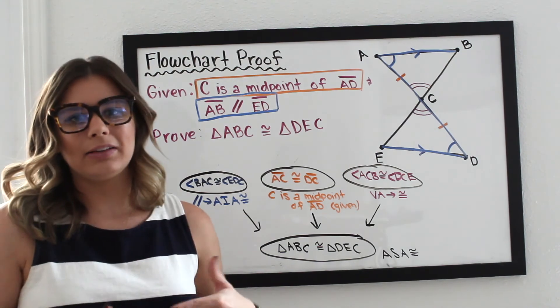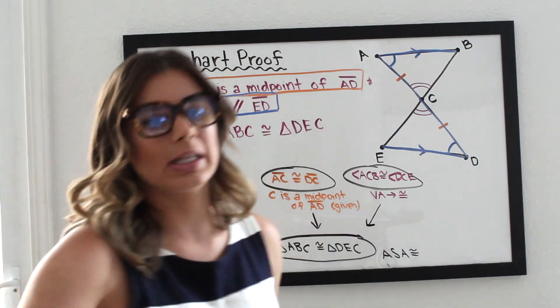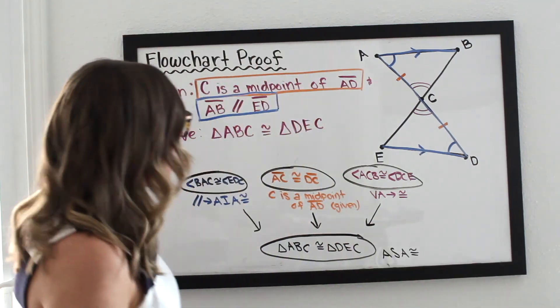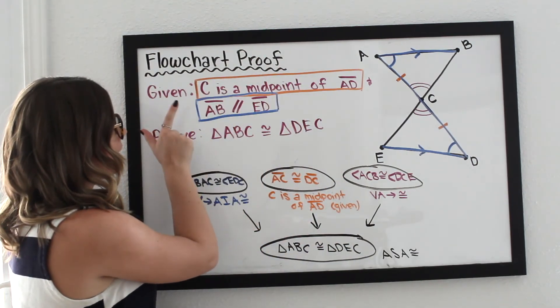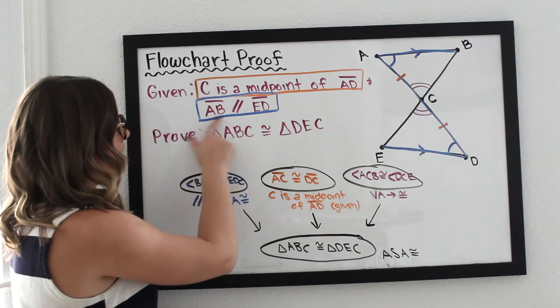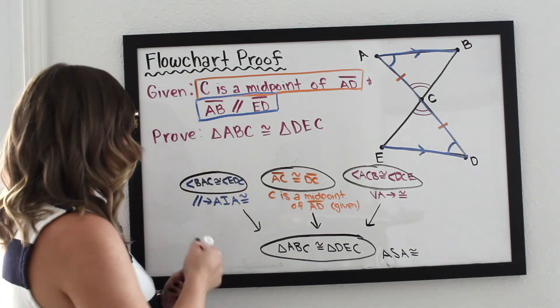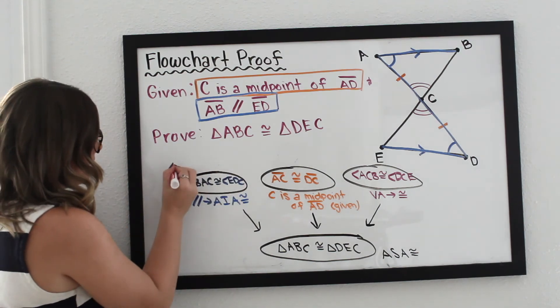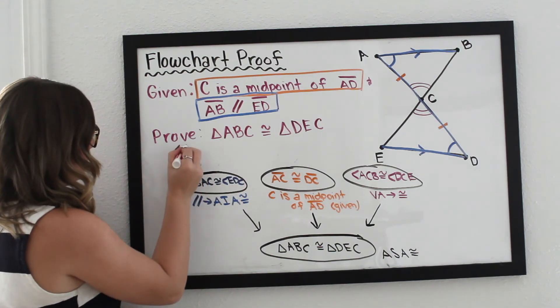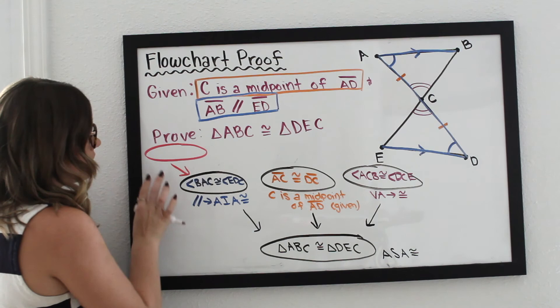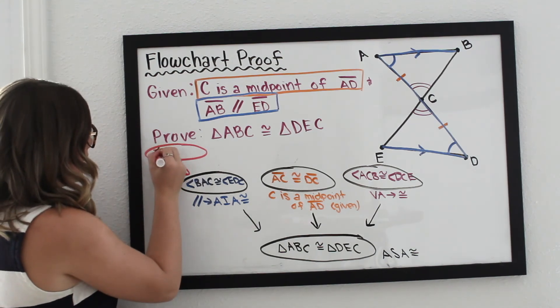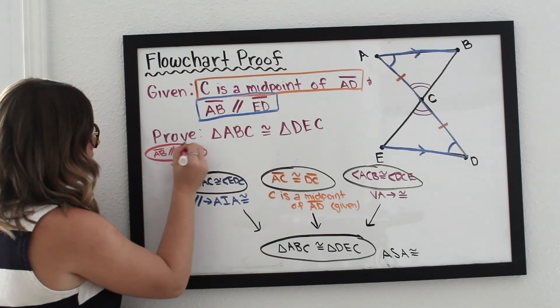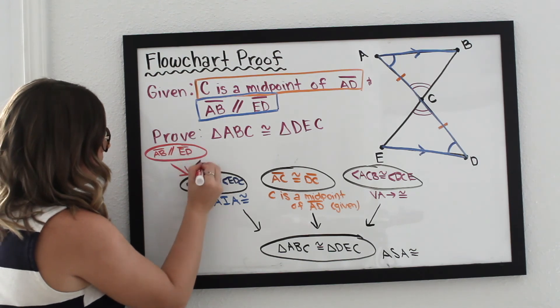One kind of detail, if you want to elevate your proof to the next level, is we did use all of our given information, except we didn't explicitly state that we knew A, B was parallel to E, D. So if you add that, that's going to elevate your proof to kind of like a higher level proof. So here, where we actually use parallel lines, I'm going to add that A, B is parallel to E, D, and that was given.